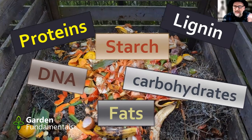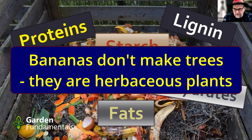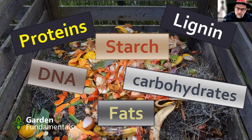Most of the nutrients inside these kitchen scraps are found inside large molecules. As the banana tree makes its bananas, it creates all these large molecules — that's what makes up a banana. Composting is the opposite of that process: it takes all of these large molecules and turns them into smaller and smaller molecules until we get down to nutrients. And nutrients are what plants can use — none of the large molecules are of any use to a plant.